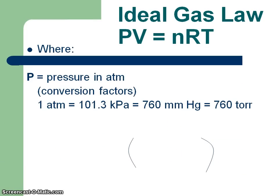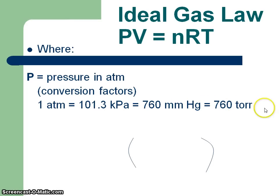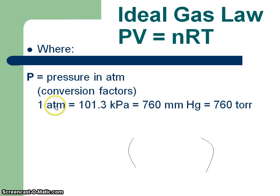In this law, you need to have pressure in atmospheres. Here are some conversion factors you'll need to know — you can set them up into several different fractions. Torr is essentially the same as millimeters of mercury, because Torr was a scientist that millimeters mercury was named after. Kilopascals is an English unit and atmospheres is our SI unit.